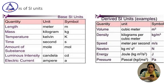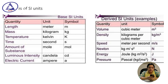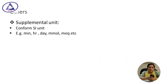Classes of SI units include base SI units, derived SI units, and others. Base SI units are: meter for length, kilogram for mass, Kelvin for temperature, second for time, mole for amount of substance, candela for luminous intensity, and ampere for electrical current. Derived SI units include: meter cube for volume, kg per meter cube for density, meter per second for speed, Newton for force, joule for energy, and pascal for pressure. Supplemental confirmed SI units include minute, hour, day, millimole, milliequivalent, etc.